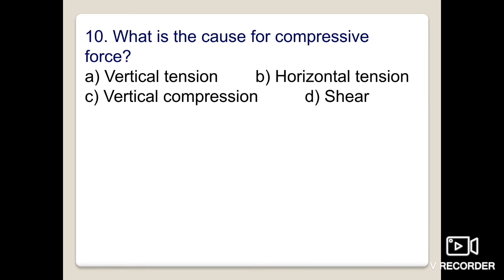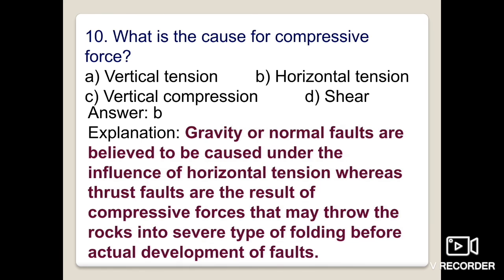The tenth question: what is the cause for normal faults — compressive force, vertical tension, horizontal tension, vertical compression, or shearing? Option B — horizontal tension — is correct. Gravity or normal faults are believed to be caused under the influence of horizontal tension, whereas thrust faults are the result of compressive forces that may throw rocks into severe folding before actual development of faults.